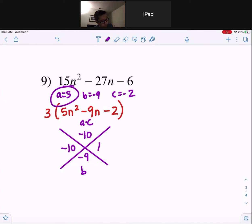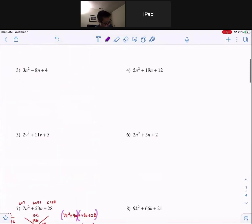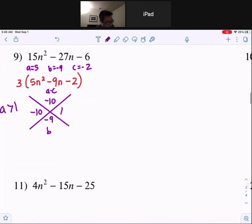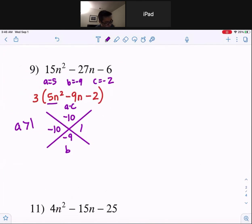And look, everybody, since a is greater than 1, that means we have to factor by grouping. Let me just check one thing real quick. Factor by grouping. So, the first term, 5n squared. The next term, remember, this breaks off into these two. So, negative 10n plus 1n, which is just n. And don't forget the minus 2, you guys.